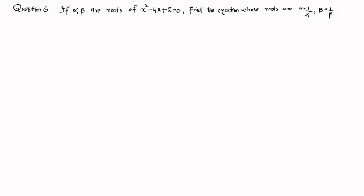Hello everyone, welcome to my channel Learn Math. Today we are going to find an equation whose roots are alpha plus 1 over alpha and beta plus 1 over beta, where alpha and beta are roots of the equation x squared minus 4x plus 2.